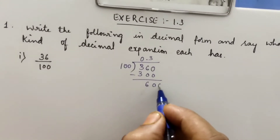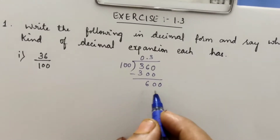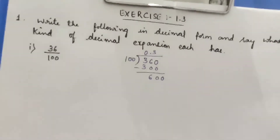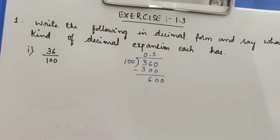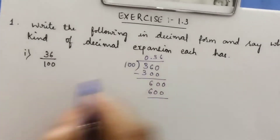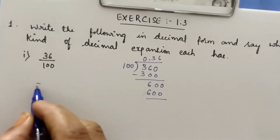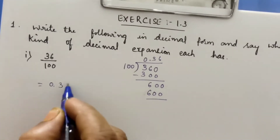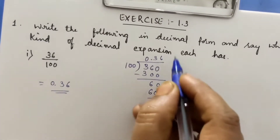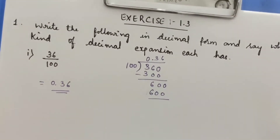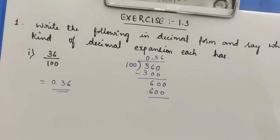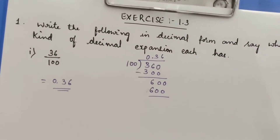Take one more 0, then it will become 600. Continue the division process — 100 sixes are 600. The quotient is 0.36. Since it is terminating — it is ending — we can say that the decimal expansion is terminating.